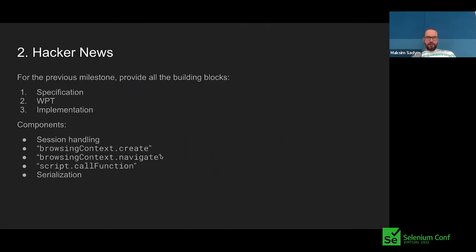The second milestone we see is Hack News, which we are working hard on implementing now. For this milestone it's basically the previous scenario — open the page, get some content, return it to the user — but we want to have all three parts: specification, WPT tests, and implementation. The components are: creating and navigating browser context, and making some script calls to get the content of the Hacker News page.